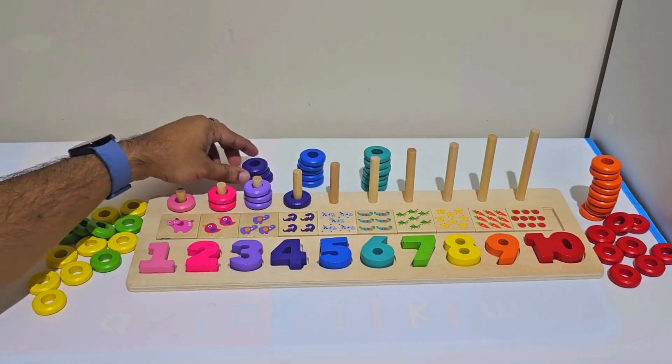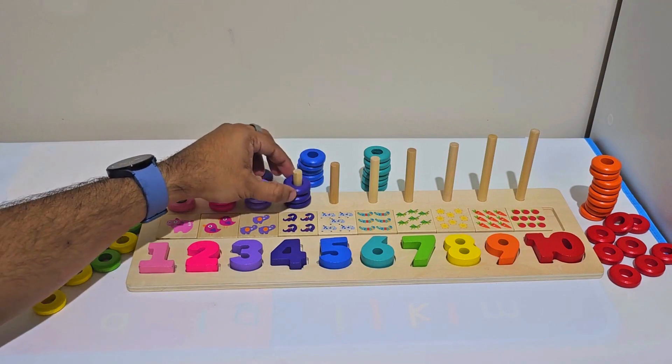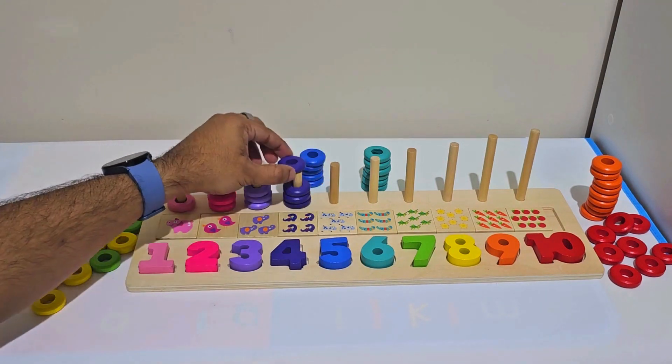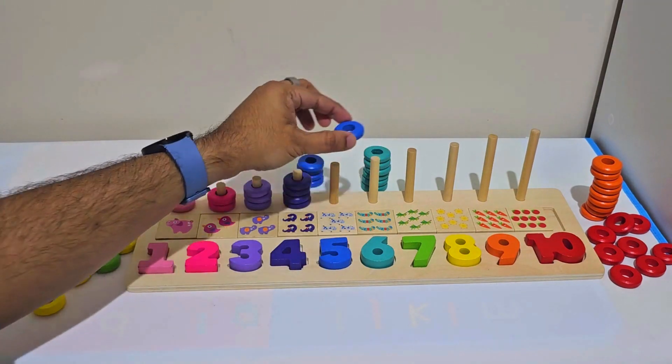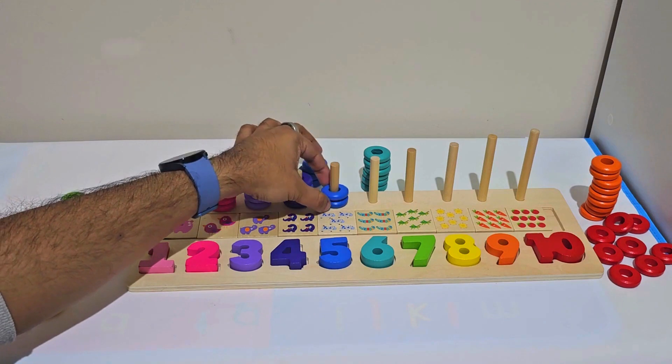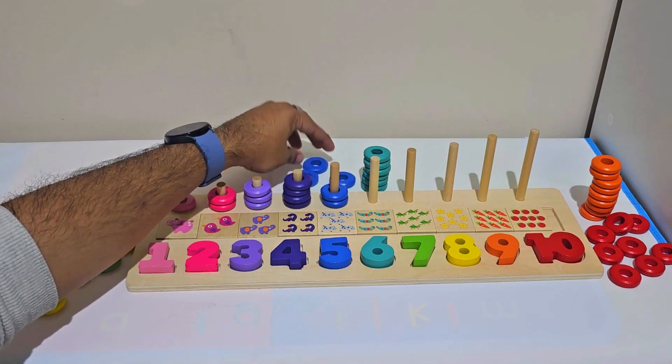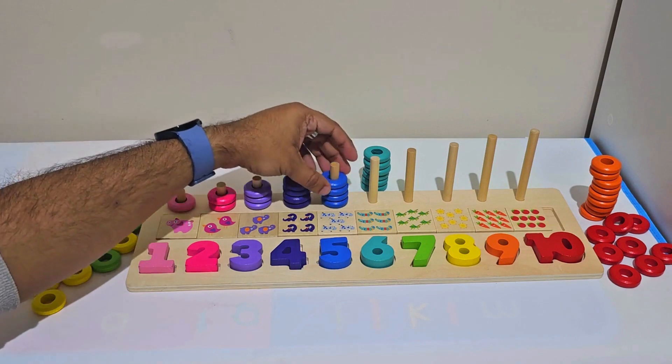Then we have 1, 2, 3, 4 deep blue rings. We have 5 light blue rings: 1, 2, 3, 4, and 5.